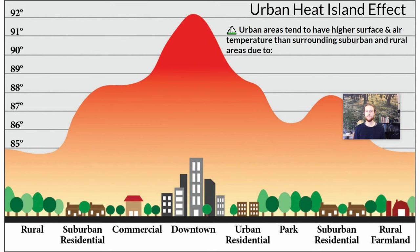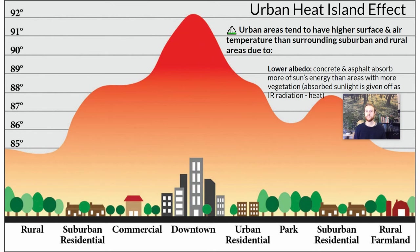The first factor is going to be their lower albedo. Albedo refers to how reflective a surface is. Because blacktop and asphalt are really prevalent in cities and there's less vegetation, they're going to be darker in color and so they're going to absorb more of the sun's rays. When a surface absorbs more sunlight and reflects less, it's going to radiate some of that absorbed energy out as infrared radiation, which is perceived by humans as heat.